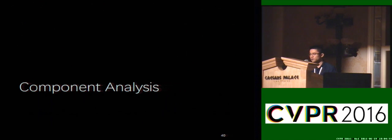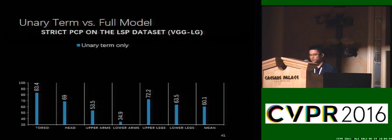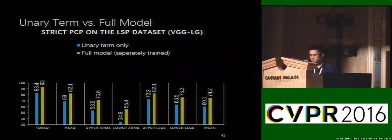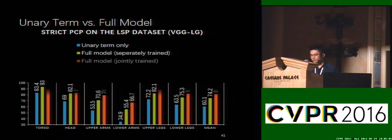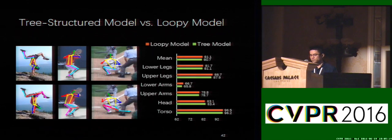Now we turn to the component analysis. To see the effectiveness of considering global pose consistency in training the network, we start by training the baseline model — that is, only training the front-end CNN — which achieves 60.1% PCP. Then we train the front-end CNN first and fix it to train the message-passing layers, improving performance by 14%. Finally, we jointly train the whole framework, further improving performance by about 7%. Our framework is flexible for both tree-structured models and loopy models. We add a symmetry constraint between the left and right knees, which is very helpful for reducing the double-counting problem in legs.